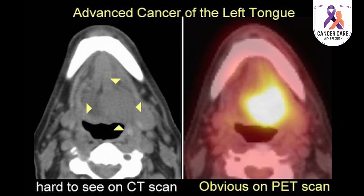PET CT scan is a standard investigation whenever we are planning for any curative intent treatment for localized or locally advanced oral cavity cancer. Sometimes we do some molecular tests on the biopsy sample to take treatment decisions. This is particularly in advanced stages of oral cavity cancer, like PD-L1 testing, etc.